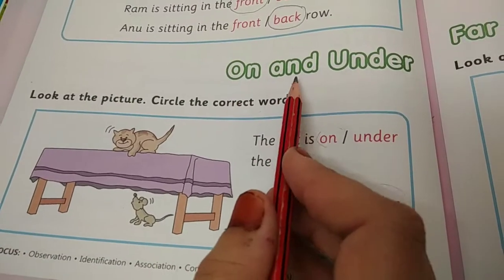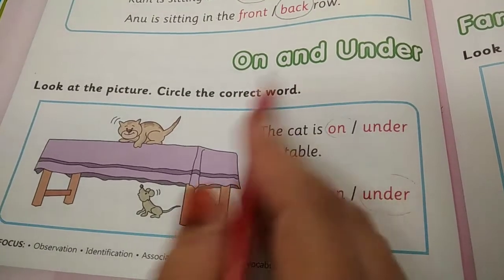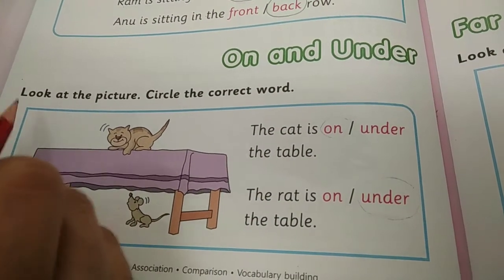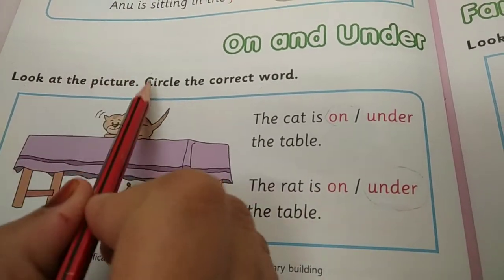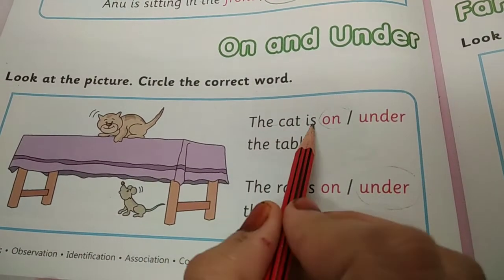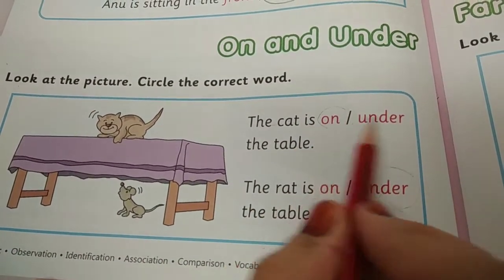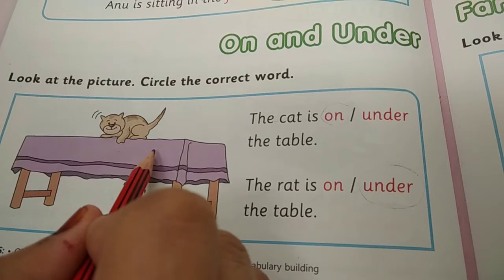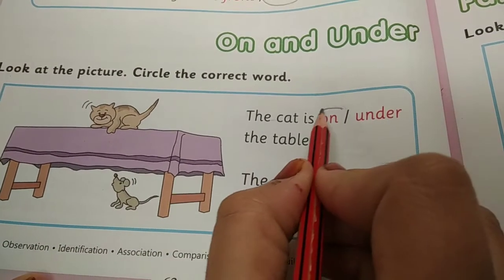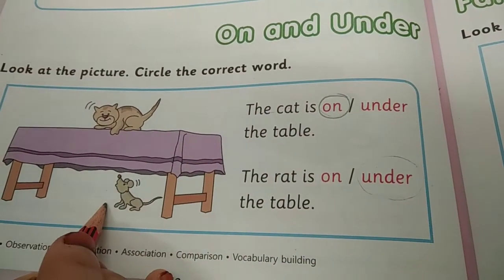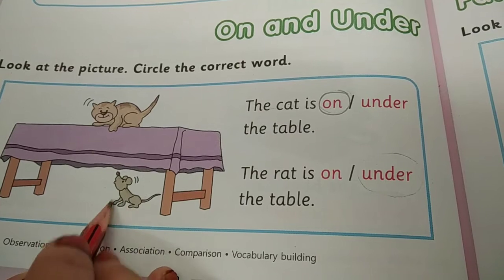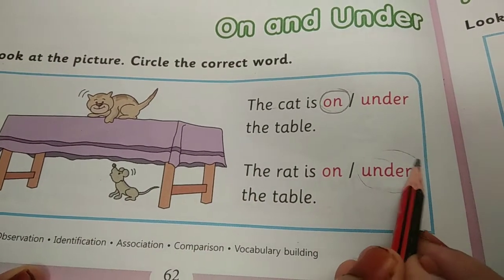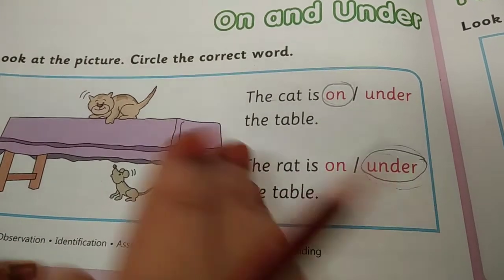Then comes on and under. On yani ke upar, under yani ke niche, kis cheez ke niche. Look at the picture. Circle the correct word. The cat is on or under the table? Cat kaha par hai? Upar hai table ke. Toh woh kya hoga? On the table. Under cat kaha hai? Neeche, table ke neeche. So, the rat is under the table.